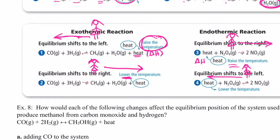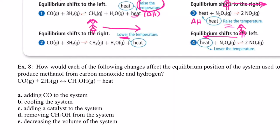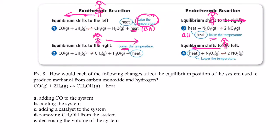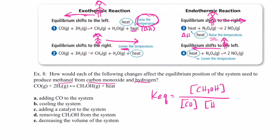Let's try example number eight: how would each of the following changes affect the equilibrium position in the system used to produce methanol from carbon monoxide and hydrogen? The equilibrium expression has methanol CH₃OH on top and carbon monoxide and H₂ squared in the denominator. First, let's add CO to the system — that places a stress on it, we have excess CO and need to use it up.